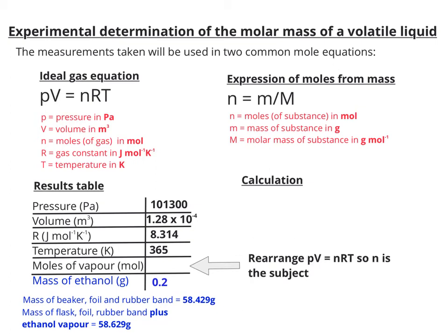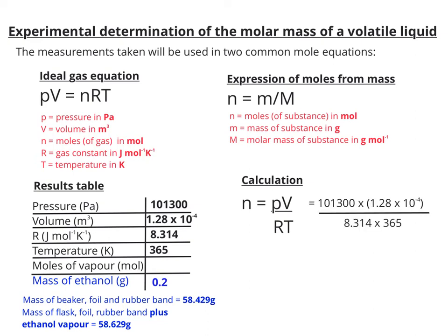What I need to do is rearrange pV equals nRT so that n is the subject. Now I collect all my numbers that have been converted into the correct units and put them into that expression. That will give me quite a long calculator value, which I'm going to keep because I need to use this when I do my next stage of my calculation.